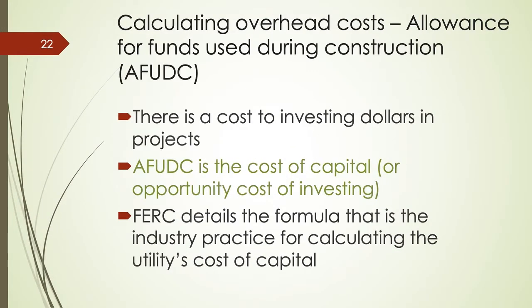This brings us to the next overhead: the Allowance for Funds Used During Construction, or AFUDC. AFUDC is probably the only overhead with a little bit of complication to it, and that isn't even too bad once you talk yourself through it and consider how you're going to finance projects through the coming year.